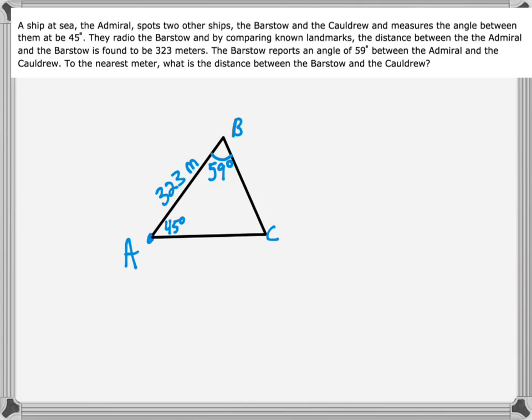We're looking to figure out how far away is the Barstow and the Cauldrew. We begin this problem by saying, well first we can figure out that other angle to be 76 degrees, and then we see that we have a side and the angle opposite it, and then we have some other angles. So particularly we can use that 45 degree angle there to find side d, which is the distance we want.